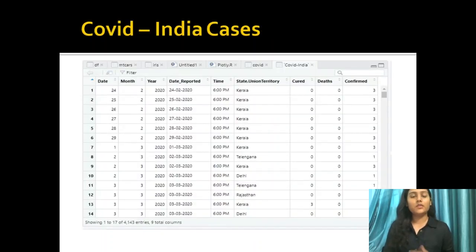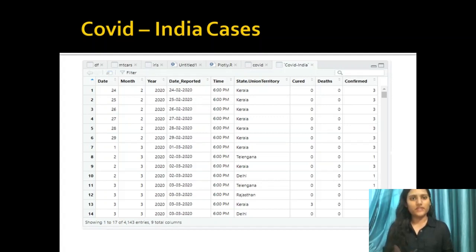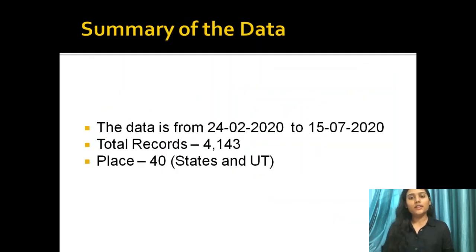In addition to worldwide data, we also cover India COVID-19 cases. The India dataset includes columns like date, month, year, time, territory or state, confirmed cases, and deaths — spanning from February 2020 onwards. The total records in the India COVID-19 dataset are 4,143, covering all states and union territories.